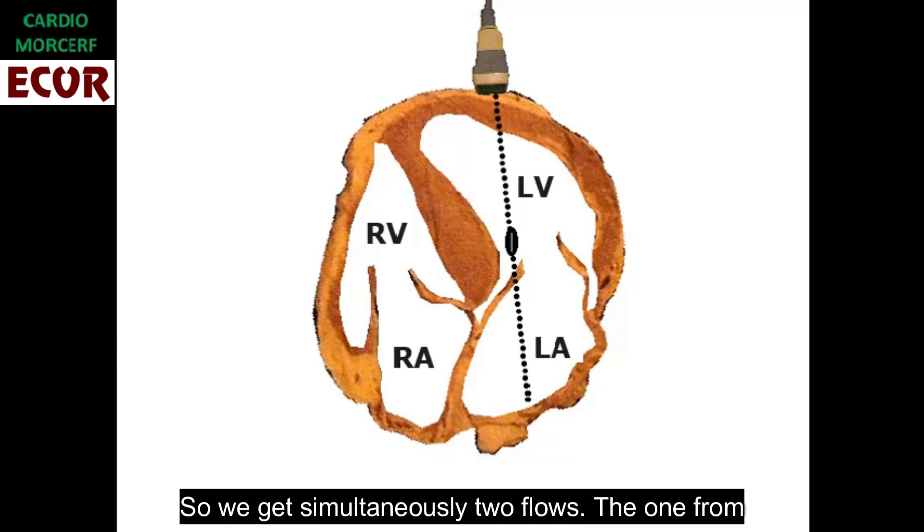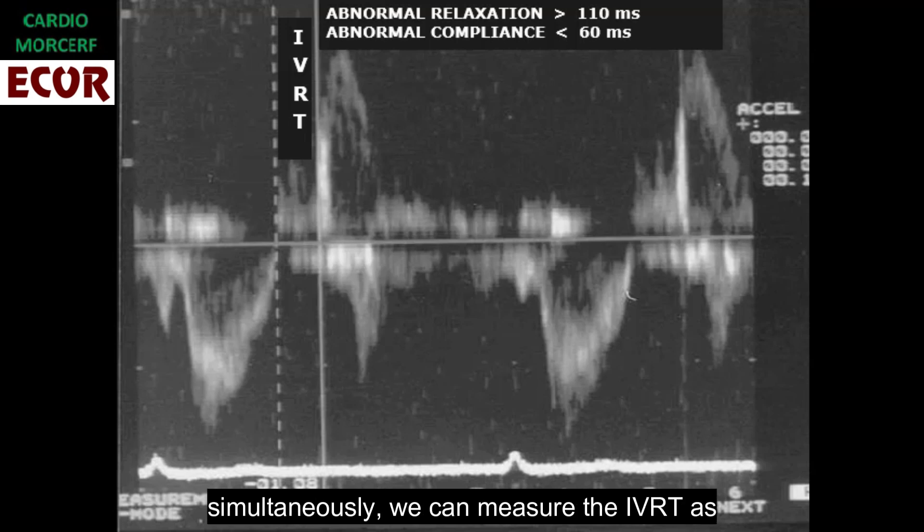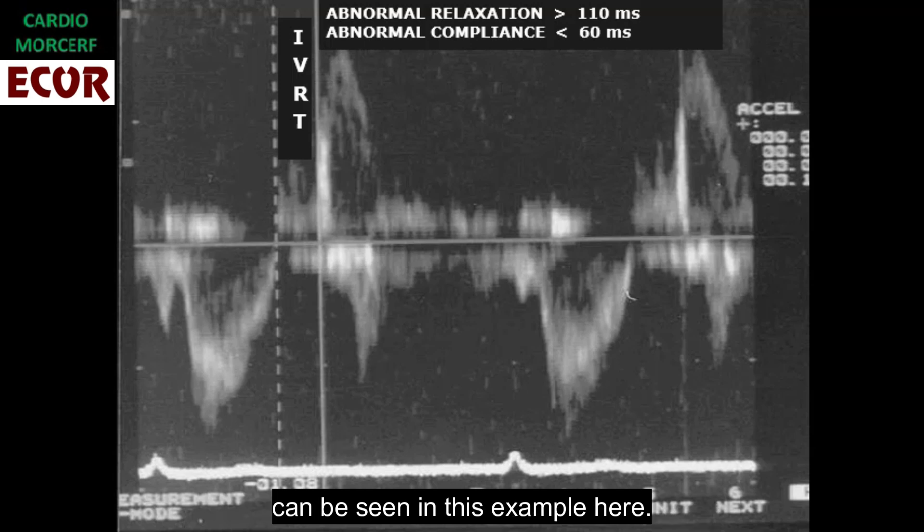So we get simultaneously two flows: the one from the left ventricular outflow tract and the other from the mitral flow. When we get these two flows simultaneously, we can measure the IVRT as can be seen in this example.